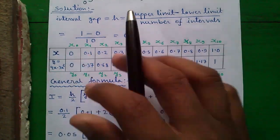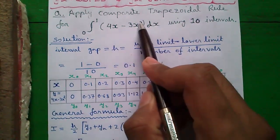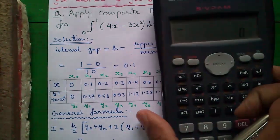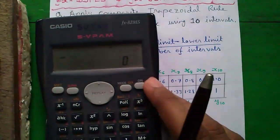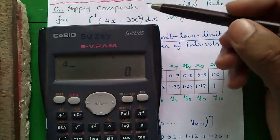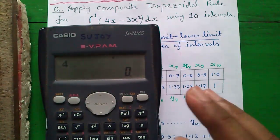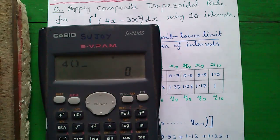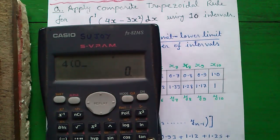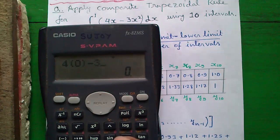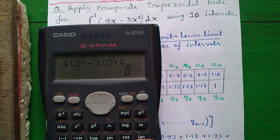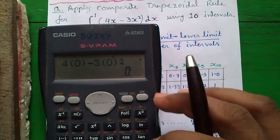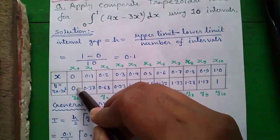Take the first value that is x equals to 0 and put that in the expression and you will get your first y value. I will tell you how to do that. Our expression is 4x minus 3x square with x equals to 0. That is 0, so for x equals to 0, y becomes 0.